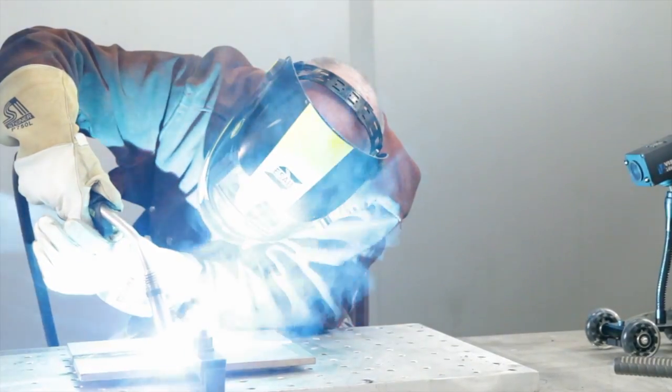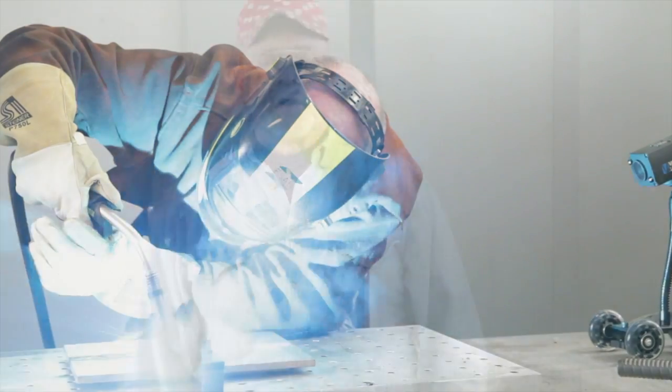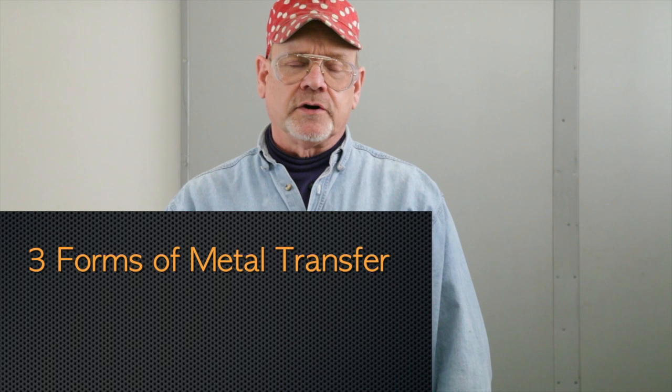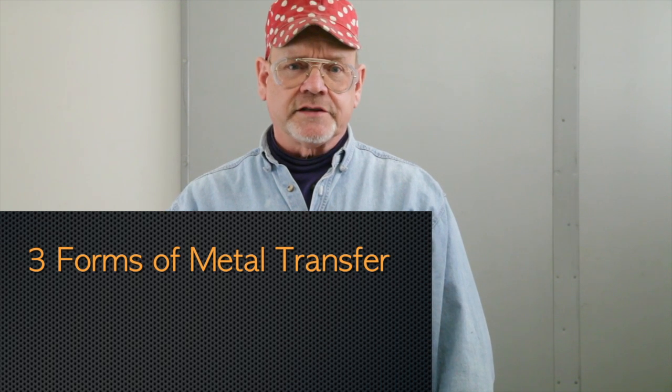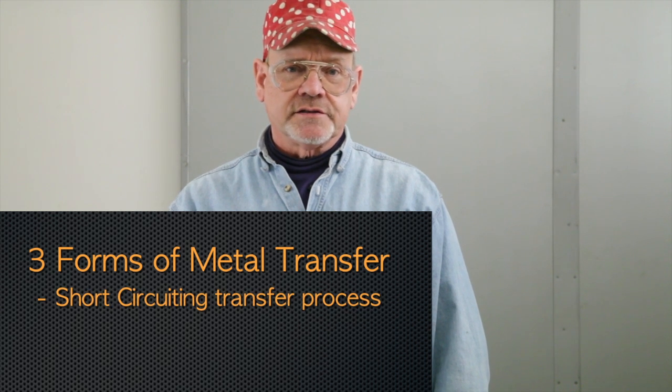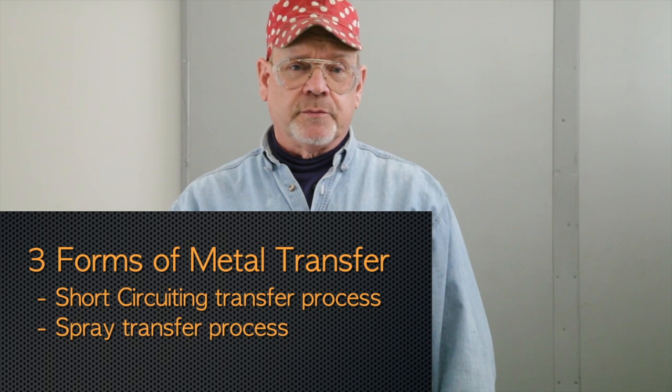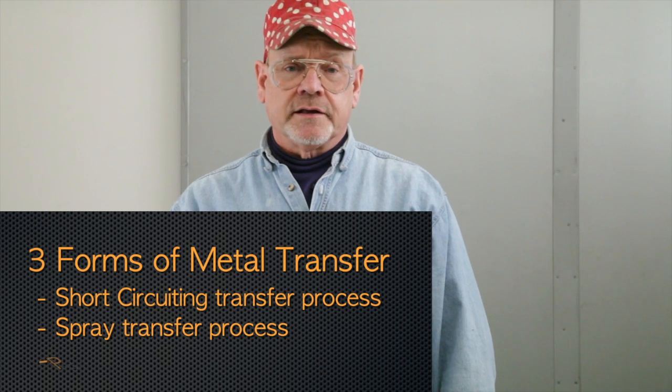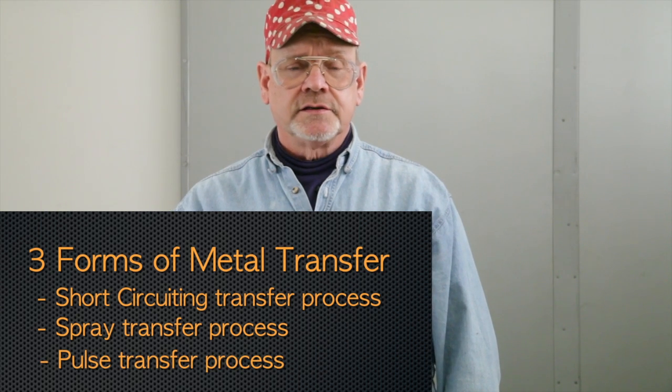Here we consider the pulsed arc MIG welding process. In this segment we will be demonstrating the pulsed gas metal arc welding process. Gas metal arc welding is also called MIG welding. There are three major forms of metal transfer in the process: the short circuiting transfer process, otherwise called short arc; the spray transfer process; and the pulse transfer process. Pulse gas metal arc welding has an advantage of being the best of both the short circuit transfer and the spray arc process.